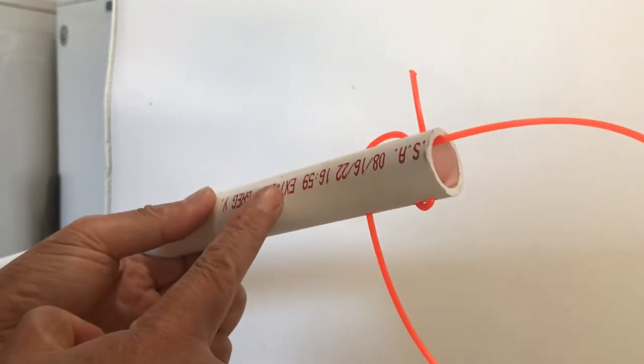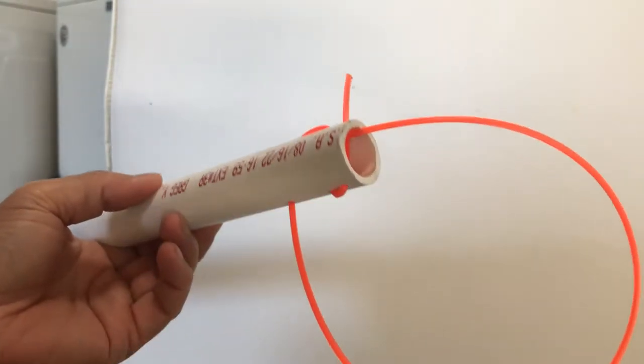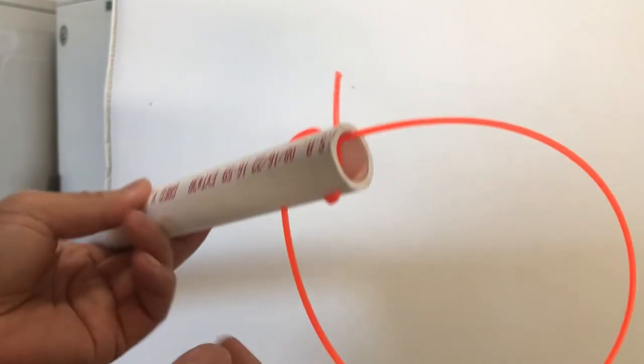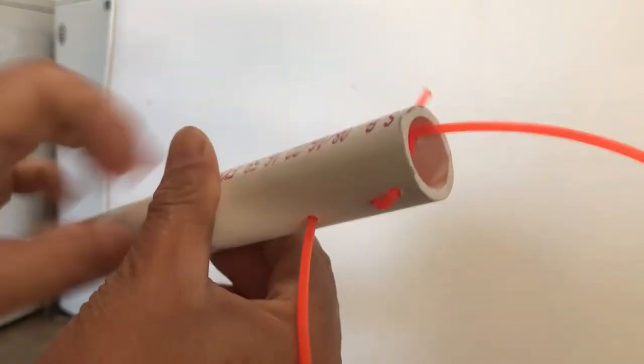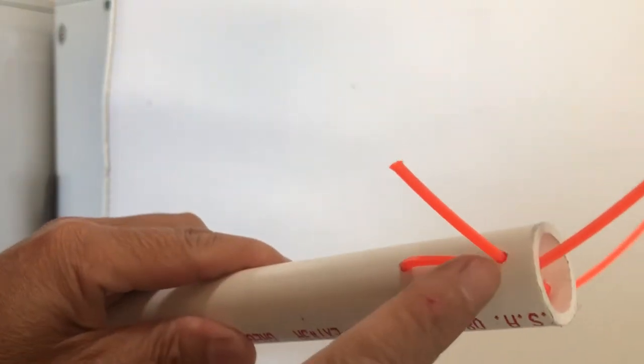This is a piece of PVC pipe. What you need to do is drill three holes: one hole here, another hole here as the second hole, and the third hole, drill through it.